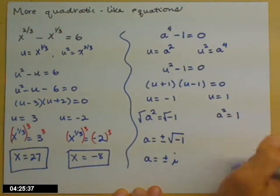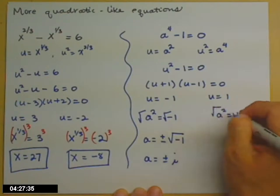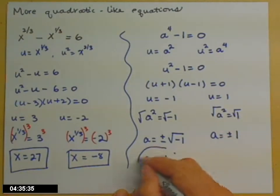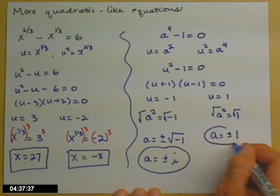And then my second set of answers I'm looking for, square root both sides. a equals, don't forget your plus minus, and the square root of one is one. So there are the four answers.